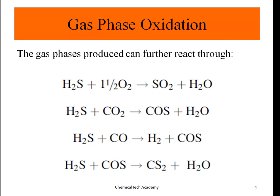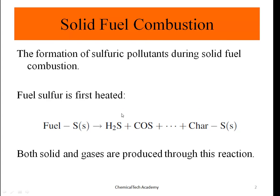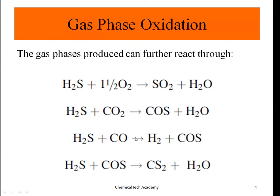Now let's look at the gas phase oxidation. The gas phase products can further react in the following reactions: H2S reacting with oxygen produces SO2 and water. H2S plus CO2 produces COS plus water. H2S plus CO2 can also result in CS2 plus water. So both solid and gas phases are producing more SO2.